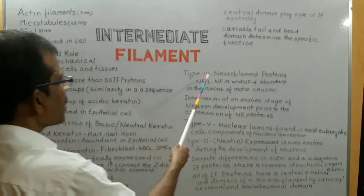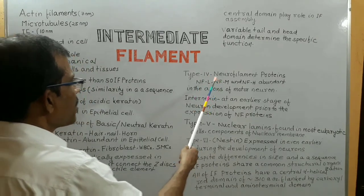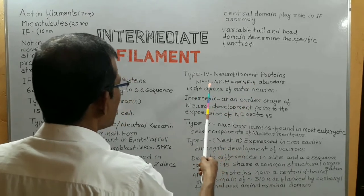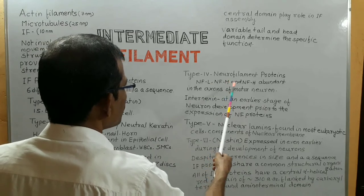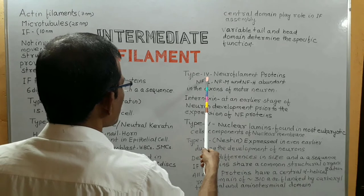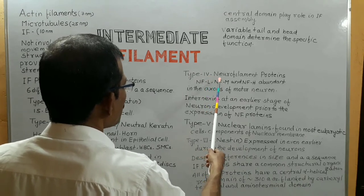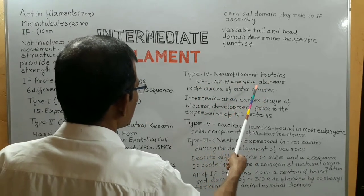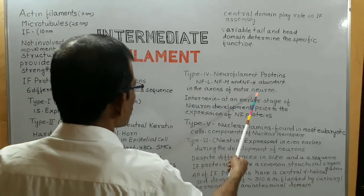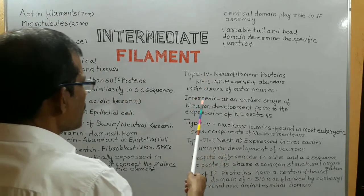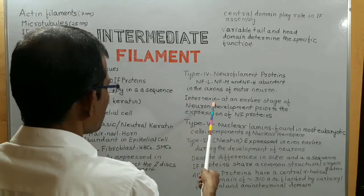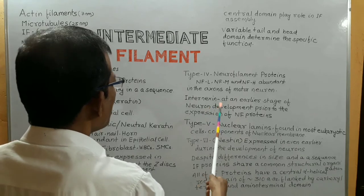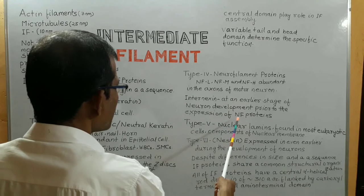Type 4 intermediate filament proteins include various neurofilament proteins: NFL (light), NFM (medium), and NFH (heavy), which are abundant in the axons of motor neurons. Another Type 4 intermediate filament protein is internexin, which is expressed at an earlier stage of neuron development prior to the expression of neurofilament proteins.